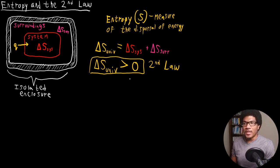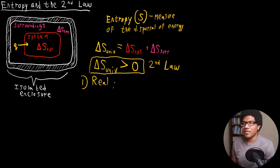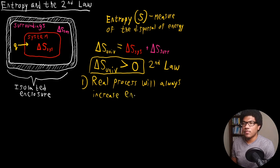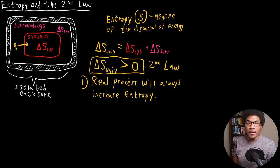Basically, this is just telling us that for any real process, there will be an increase in entropy. There are a few ways to state this. We can say that for any real process, there will always be an increase in entropy. It's important to understand that we're talking about delta S of the universe — you can have a decrease in entropy in the system or surroundings, respectively.